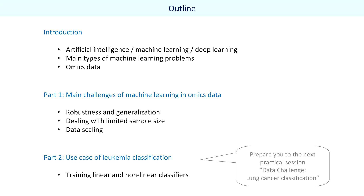In the first part we'll consider the main challenges of machine learning for omics data. We'll briefly discuss the difference between artificial intelligence, machine learning and deep learning. We will then recall main types of machine learning problems and also main types of omics data. After that we will look closely at the main challenges of machine learning specifically for omics data: robustness, dealing with limited sample size and data scaling. To illustrate these points I shall use a real use case of a leukemia dataset.